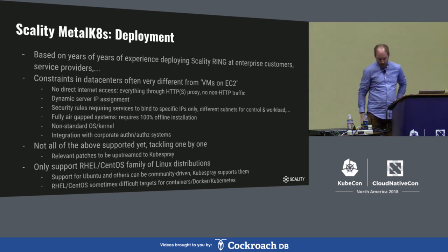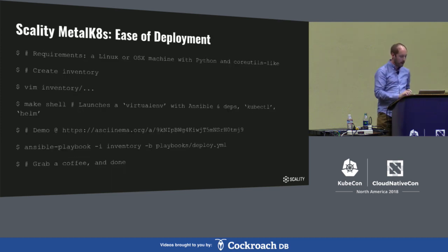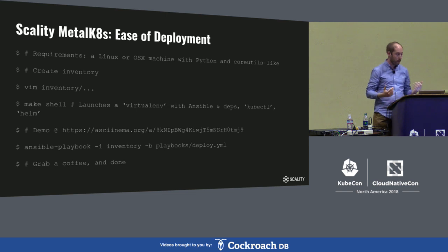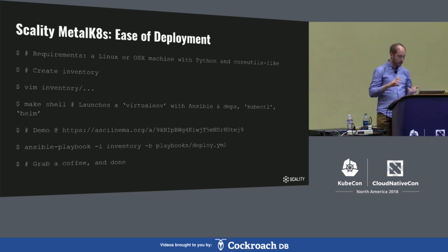Unlike KubeSpray, we only support RHEL and CentOS because that is what our customers need. We would be very willing to accept PRs which add Ubuntu support or whatever else, but it will not be part of the testing efforts we do. To make it really easy to set up a cluster, all you have to do is create an inventory file, which can be like two files of five lines each. We added a Make target which will create a Python virtualenv with everything pre-installed at the specific versions we have tested — which includes Ansible, all the Ansible dependencies, and the KubeSpray and our playbook-specific dependencies. Then you just run the playbook.